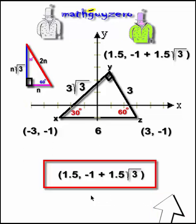So therefore, that is the answer. The coordinates of y are 1.5 comma negative 1 plus 1.5 times the square root of 3. That was a long one. That was a tough one. MGZ out.